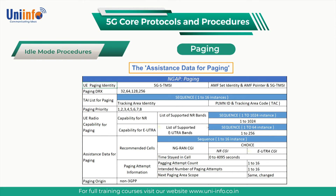The base station can use this information to help define its own paging strategy. For example, if the AMF is approaching its final paging attempt, then the base station can increase the priority of the paging procedure and potentially broadcast the RRC paging message across an increased number of cells.